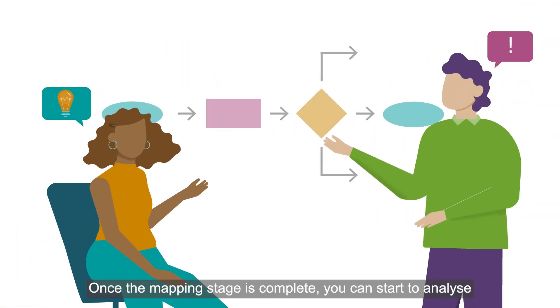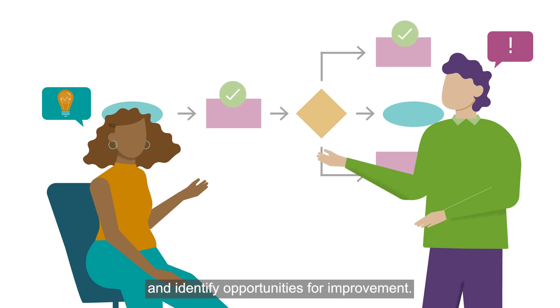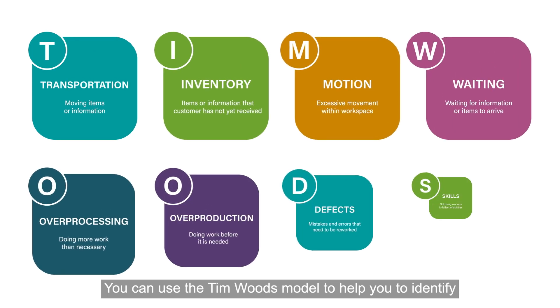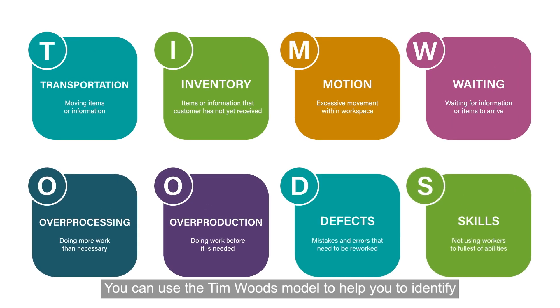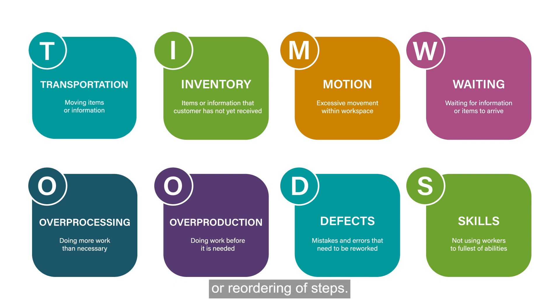Once the mapping stage is complete, you can start to analyze and identify opportunities for improvement. You can use the Tim Woods model to help identify waste in the system, along with any steps that could be removed to improve reliability of the process or reordering of steps.